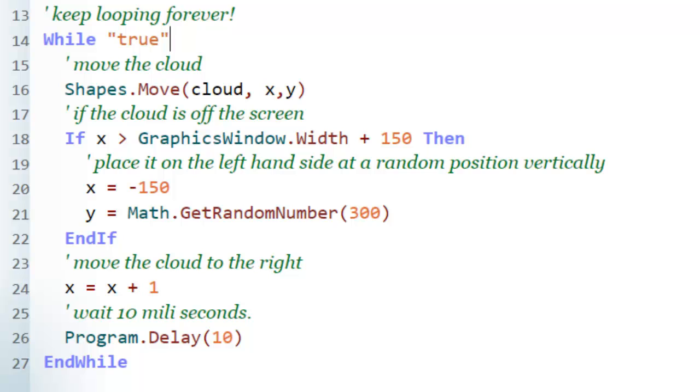When the cloud gets off the screen, I want to do something else. That's what line 18 does. If statements allow me to make a decision. In this case, the decision is if X is greater than GraphicsWindow.Width. GraphicsWindow is the actual screen you'll see the animation on. .Width is how long it is. I add 150 to that because that's the size of my cloud. I want my cloud to move all the way off the screen first before I make it wrap around.